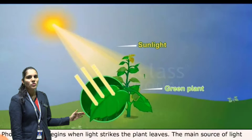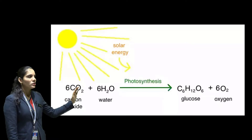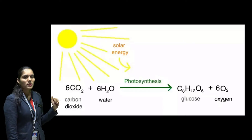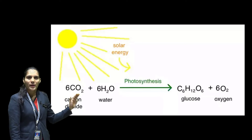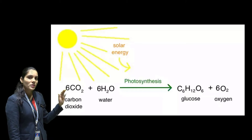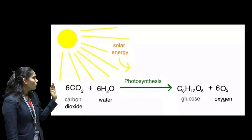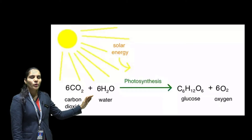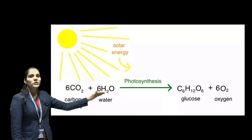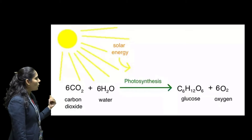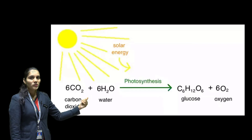That food is used for the growth and maintenance of the structures of the plant. Now let us understand the chemical equation of the photosynthesis process. Plants make one food molecule known as carbohydrate by combining six molecules of carbon dioxide — CO2 — with twelve molecules of water — H2O. They produce one food molecule known as carbohydrate, and in this process they release oxygen into the atmosphere. They also store the food in the form of starch.